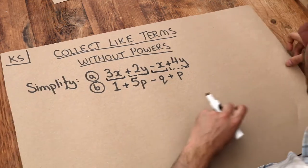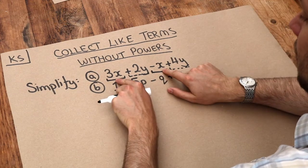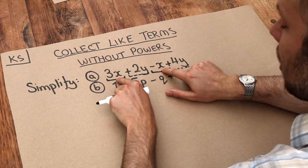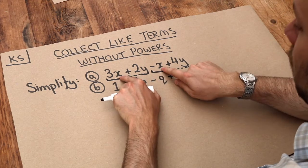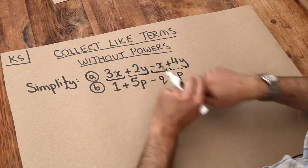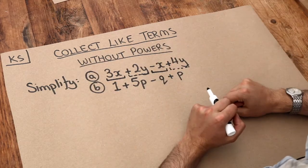So let's collect together the terms just involving the x's first. We call these like terms because they involve the same variable and they can be collected together, so simplified into one term.